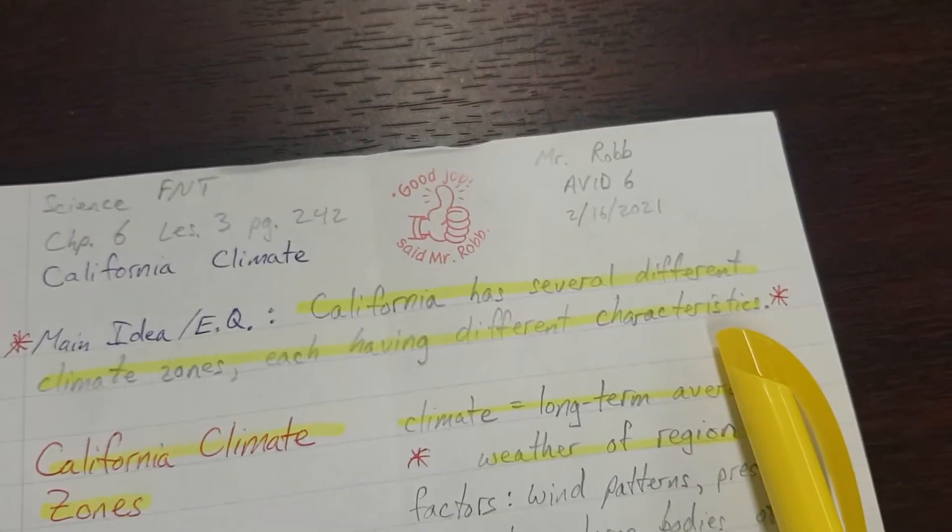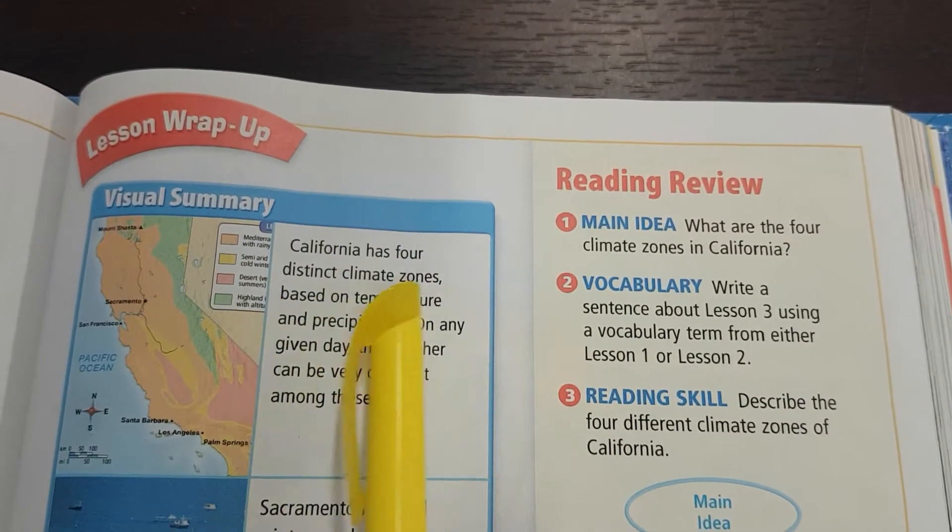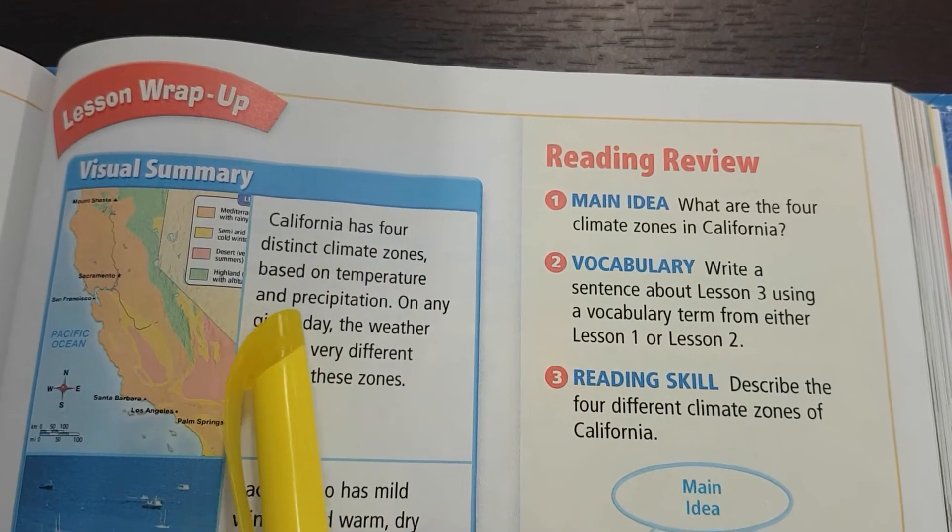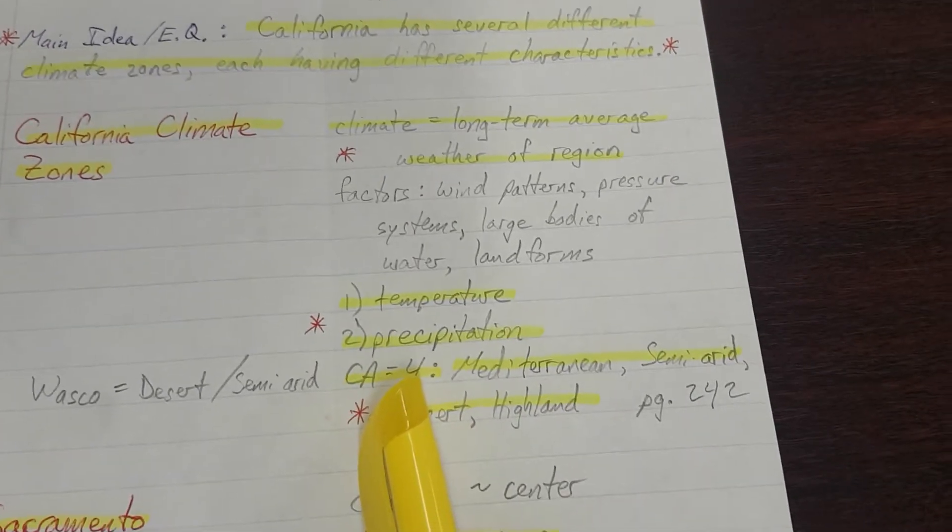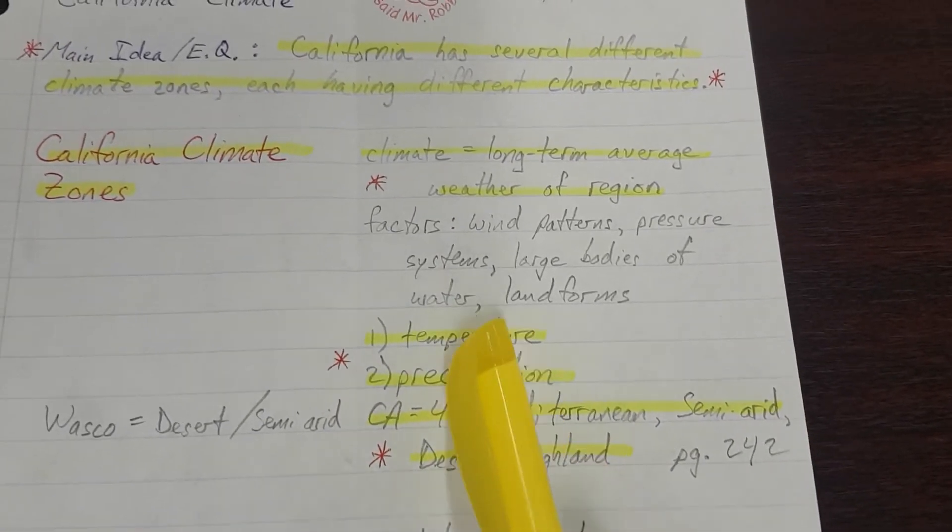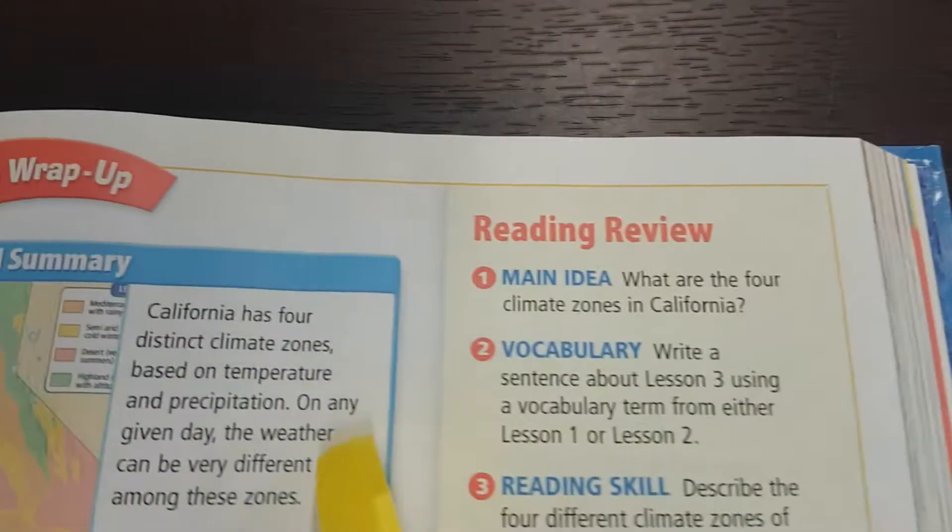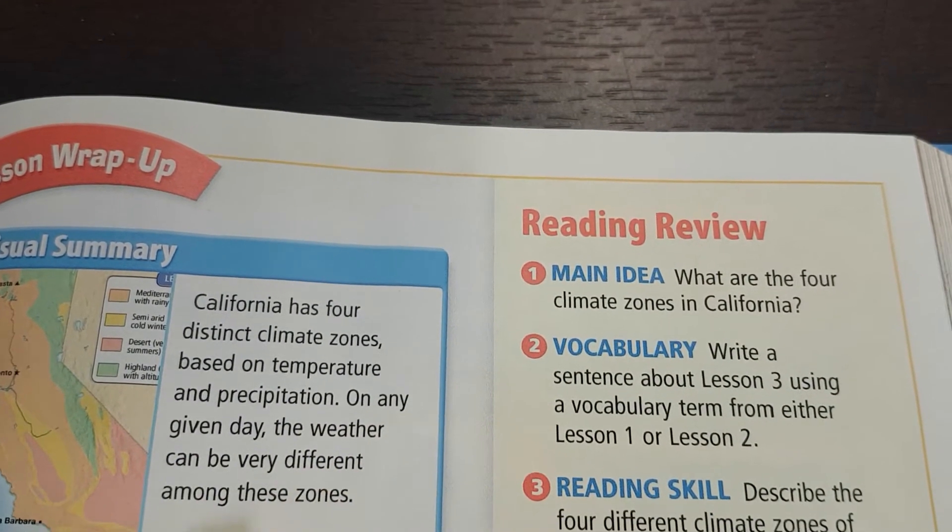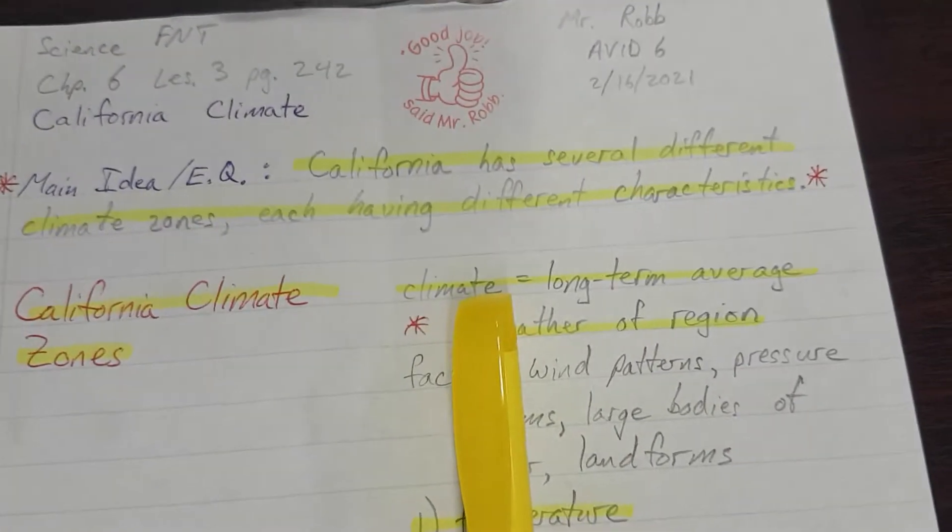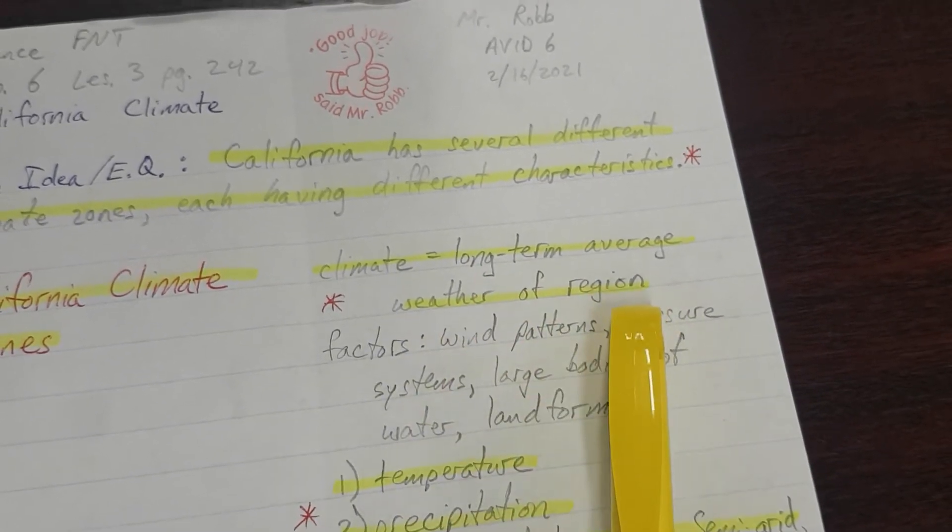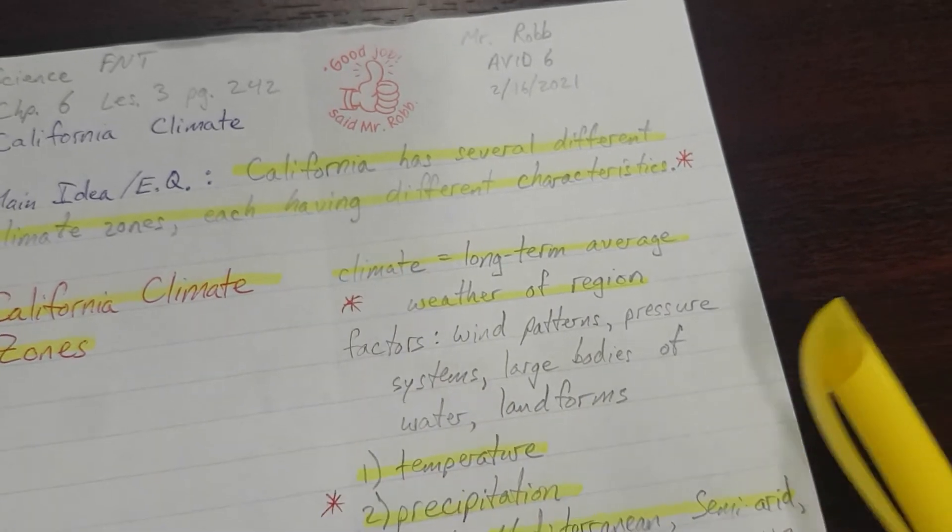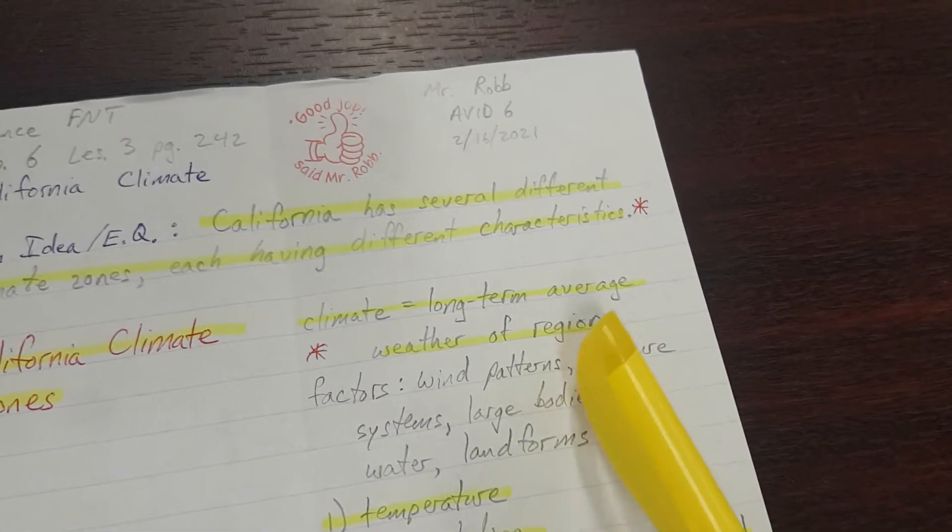Now your highlighter to do the visual summary. Highlight the main idea essential question. California has four distinct climate zones based on temperature and precipitation. So, California climate zones, four distinct ones, highlight their names, temperature, precipitation. On any given day the weather can be very different among these zones. Climate is the long-term average weather of a region. In other words, weather can change on any given day. But climate is the description of the average over a long period of time in a large region or area.